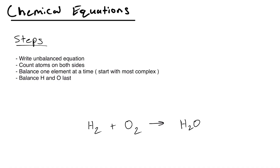Right here I have the steps written for how we're going to balance them. First, we're going to write the unbalanced equation. Then we're going to count the atoms on both sides. We're going to balance one element at a time, starting with the most complex atom. And last, we're going to make sure we balance hydrogen and oxygen last.